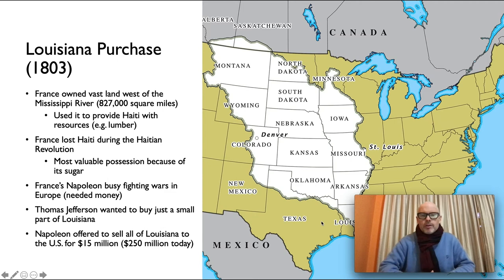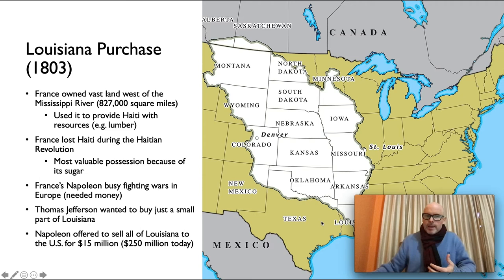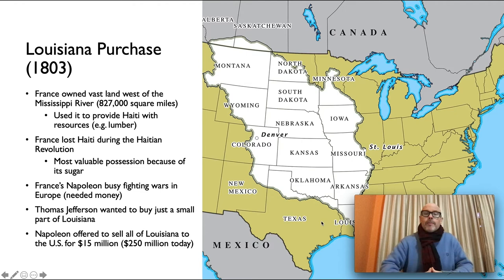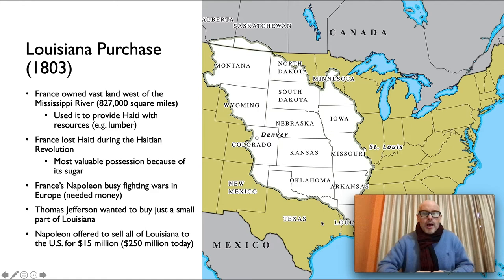Napoleon, fighting the Napoleonic Wars in Europe after the French Revolution, had wanted a Western Empire. But after losing Haiti and being embroiled in wars across Europe, he gave up on that dream. He decided he needed the money for his wars and would forget about a Western empire. So he offered to sell it all to Jefferson. Jefferson originally just wanted a small part of New Orleans to export products down the river, but Napoleon offered to sell the whole territory. Jefferson couldn't give up that opportunity, and Napoleon sold it for $15 million — about $250 million in today's money — an unbelievable deal.